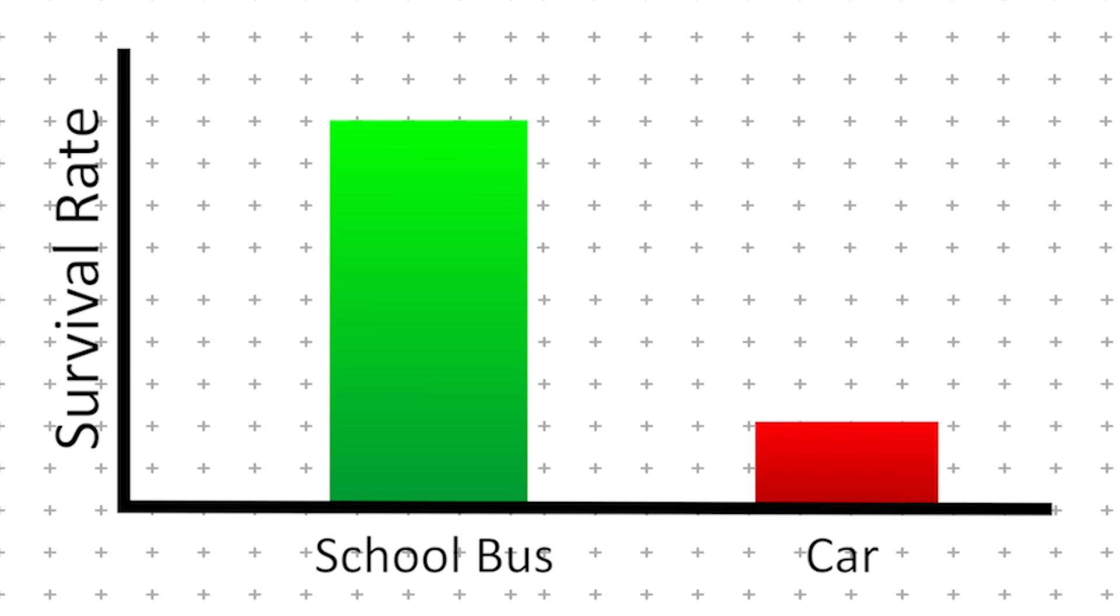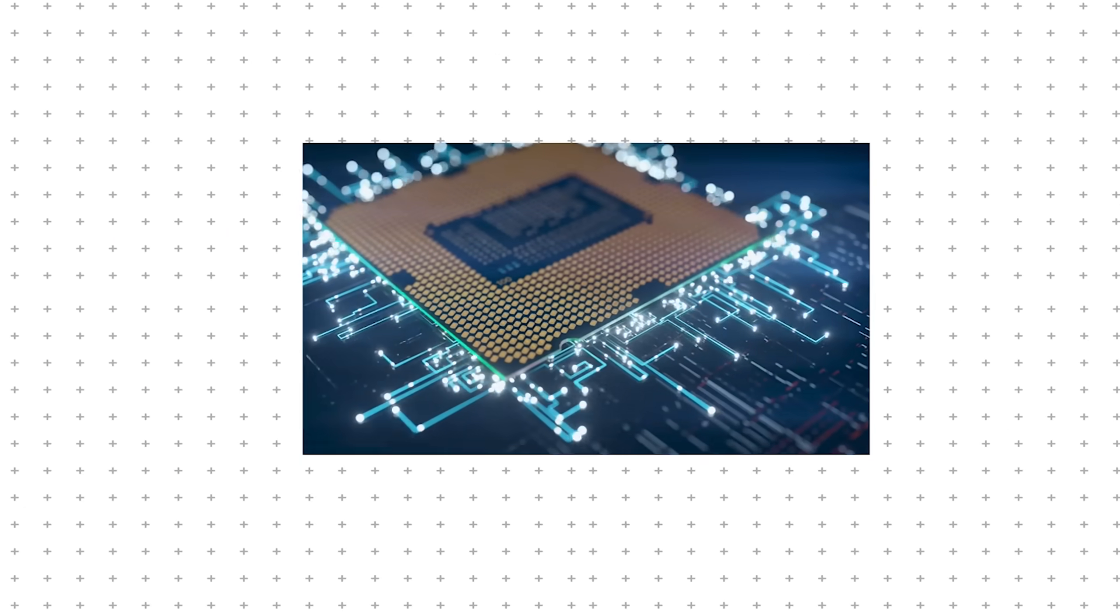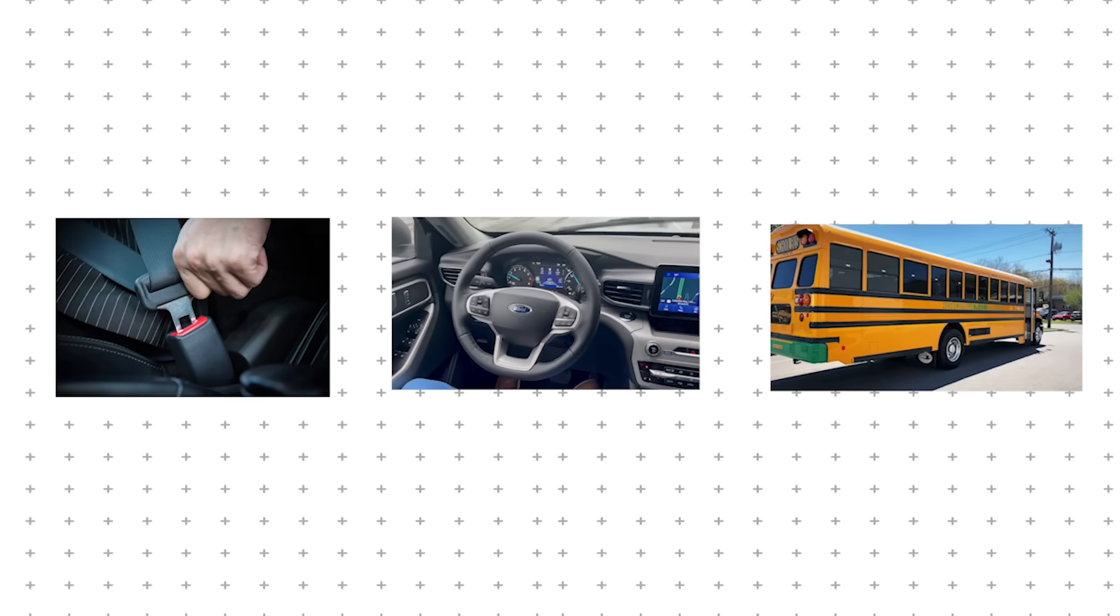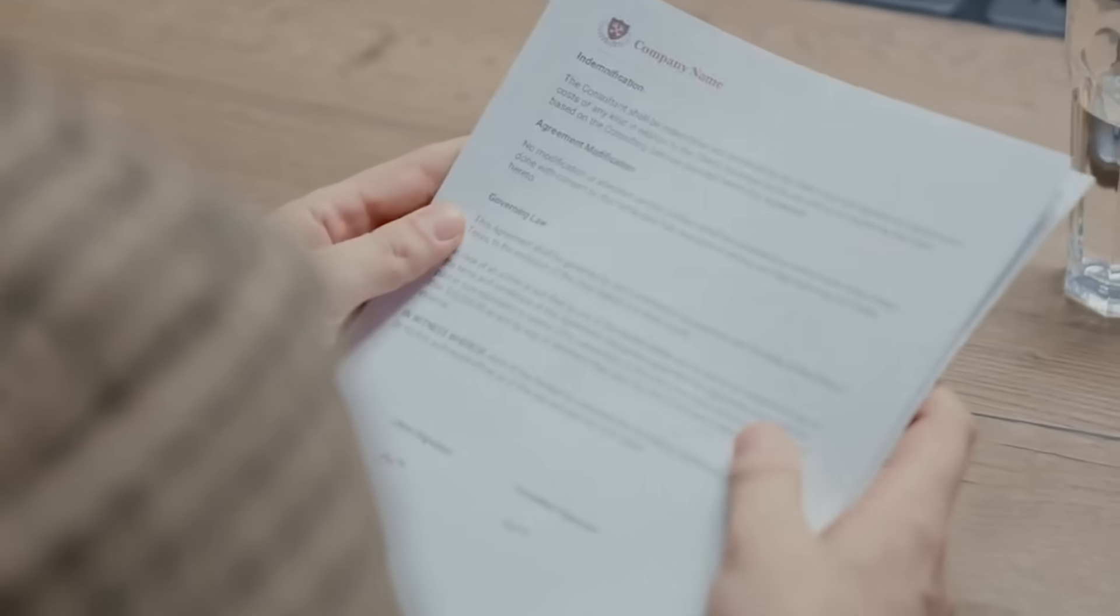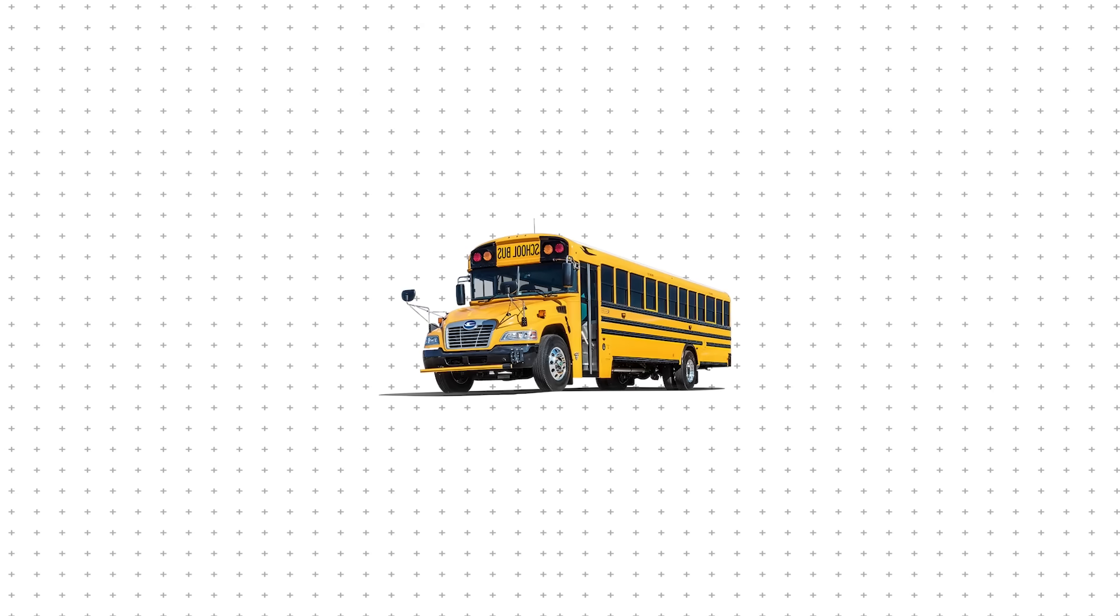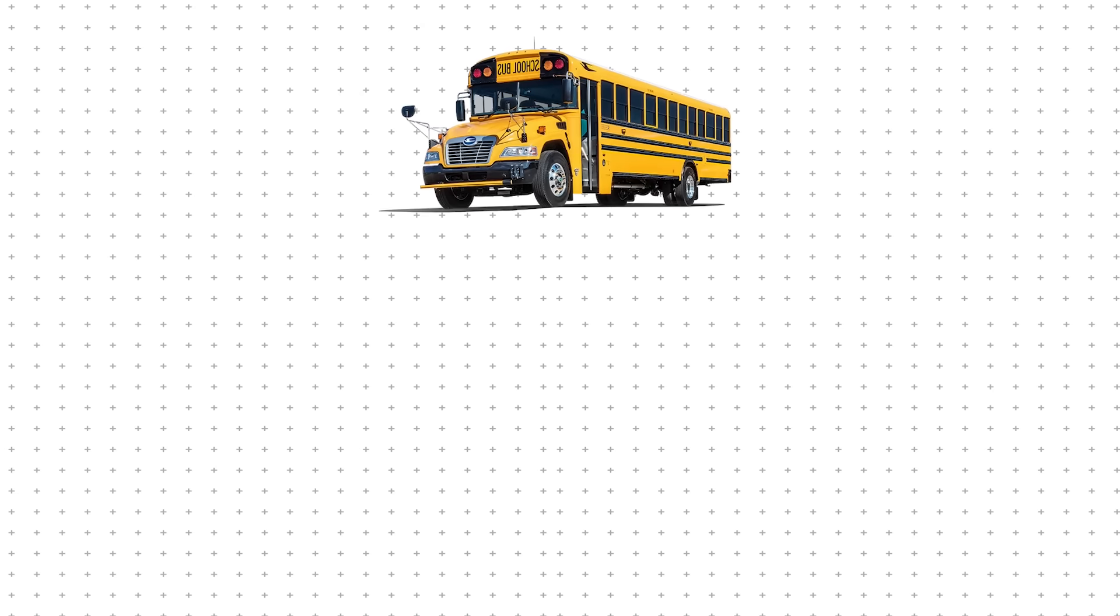But safety is never a finished project. As technology advances, debates continue over whether seatbelts, automation, or electrification should become universal in school bus design. Some believe further regulations will only bring marginal improvements, while others argue that no cost is too high when it comes to saving lives. In the end, the school bus of the future may look very different from the ones we know today.